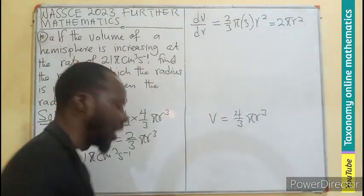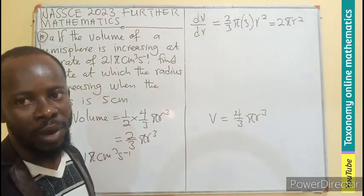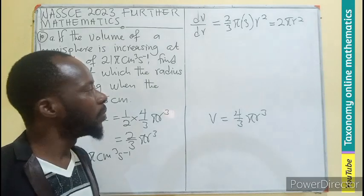So it means we have 2πR² as the rate of change of the volume with respect to the radius.